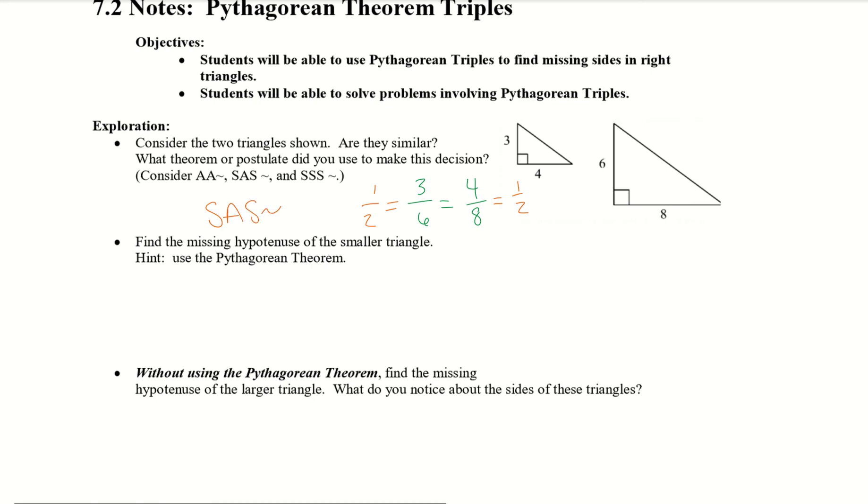We want to find the missing hypotenuse of the smaller triangle and hint to use the Pythagorean theorem. So if I do 3 squared plus 4 squared equals C squared, I'm going to have 9 plus 16 equals C squared, which will give me 25 equals C squared. And of course, we'll take the square root to get rid of that square. And we get 5 equals C. So that means this third length here is 5.